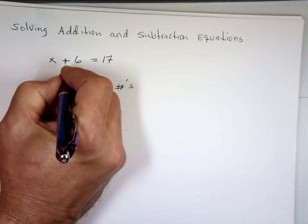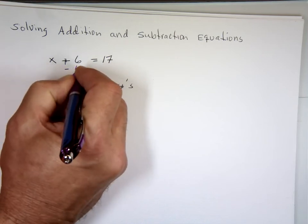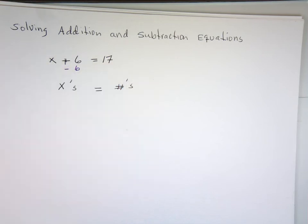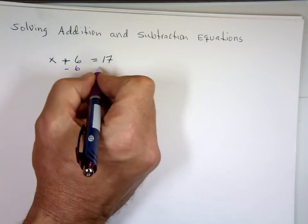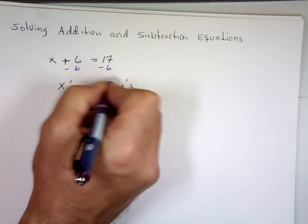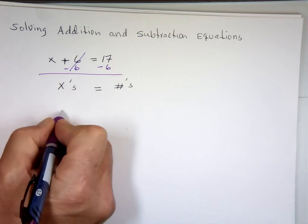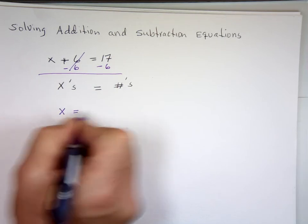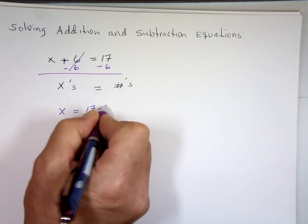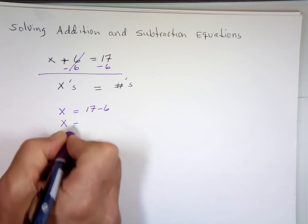So Omar said we'll subtract, because that's an addition. You subtract 6 from this side. And if you subtract 6 from this side, you've got to subtract 6 from that side. So you'll have what? x equals 17 minus 6. And what's 17 minus 6? 11.